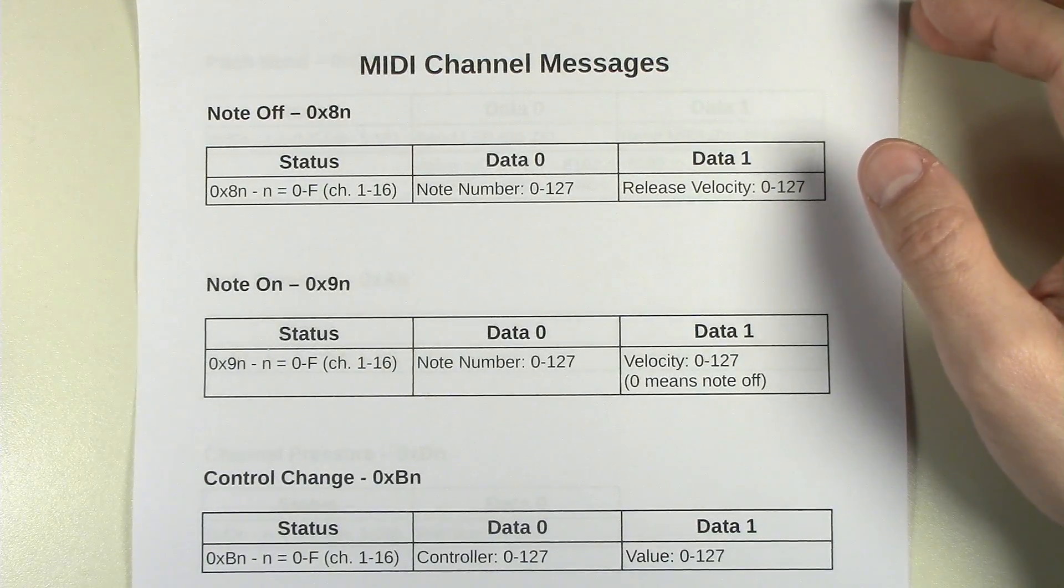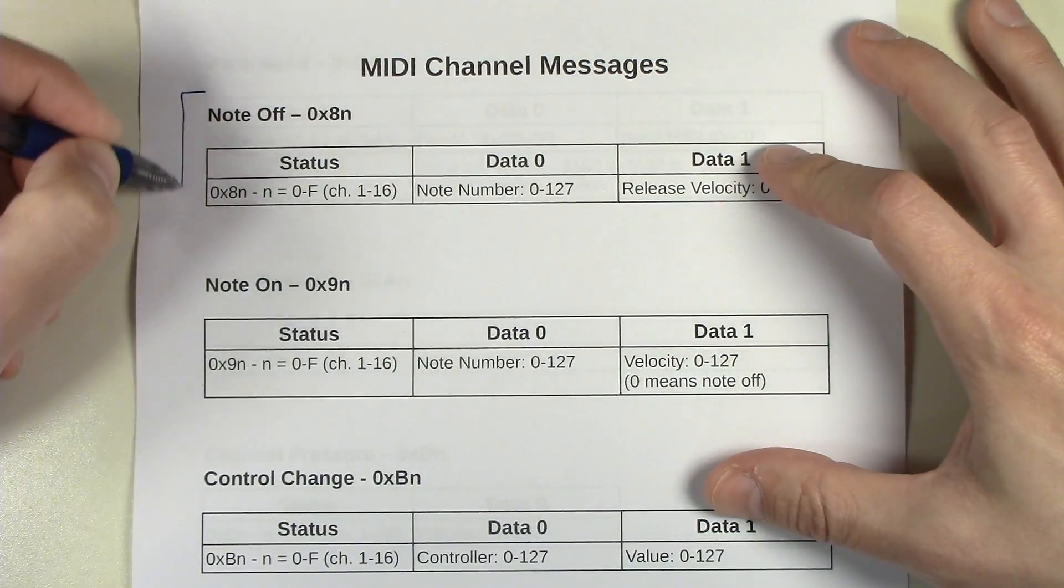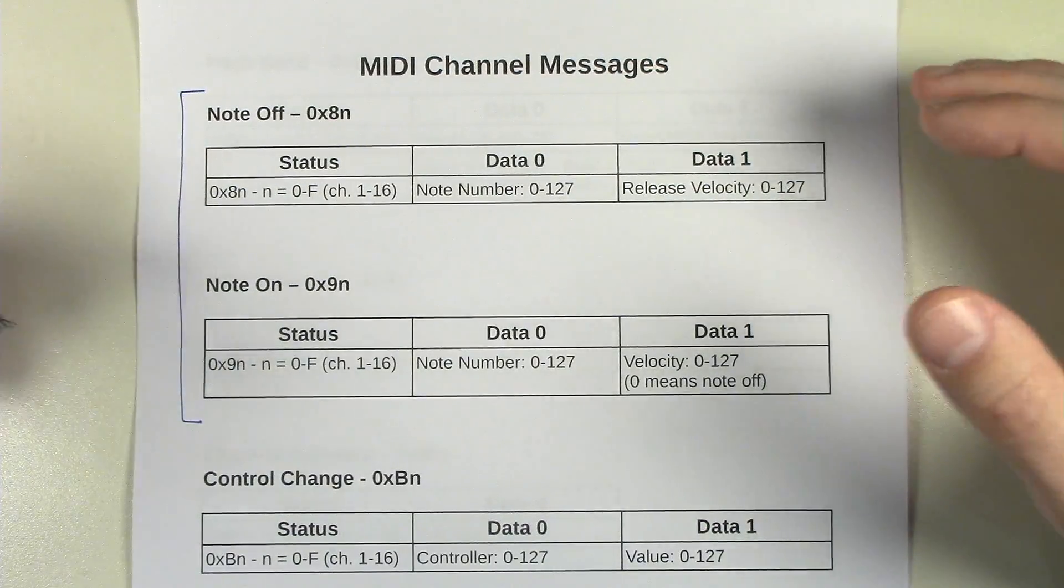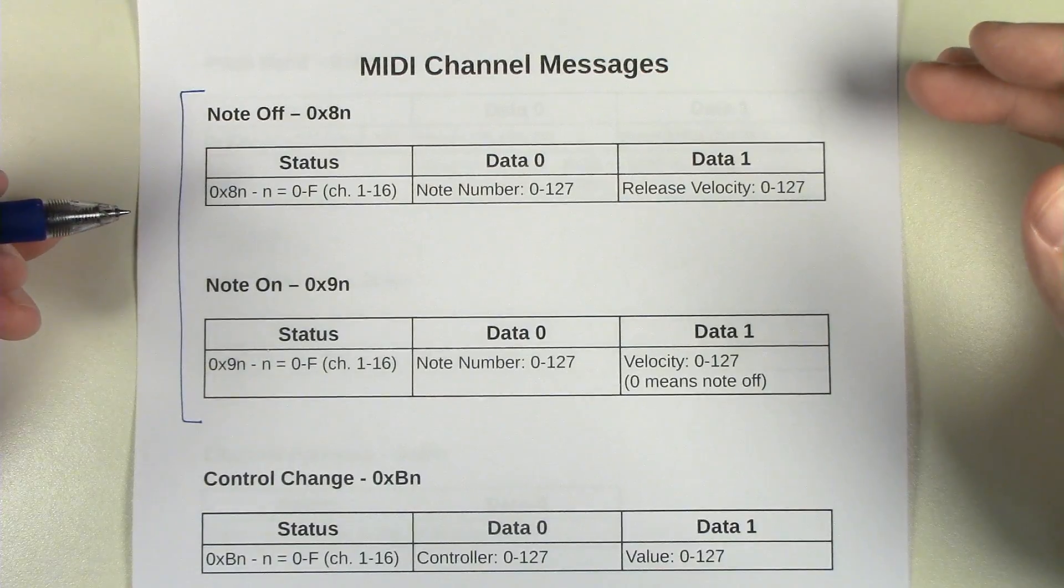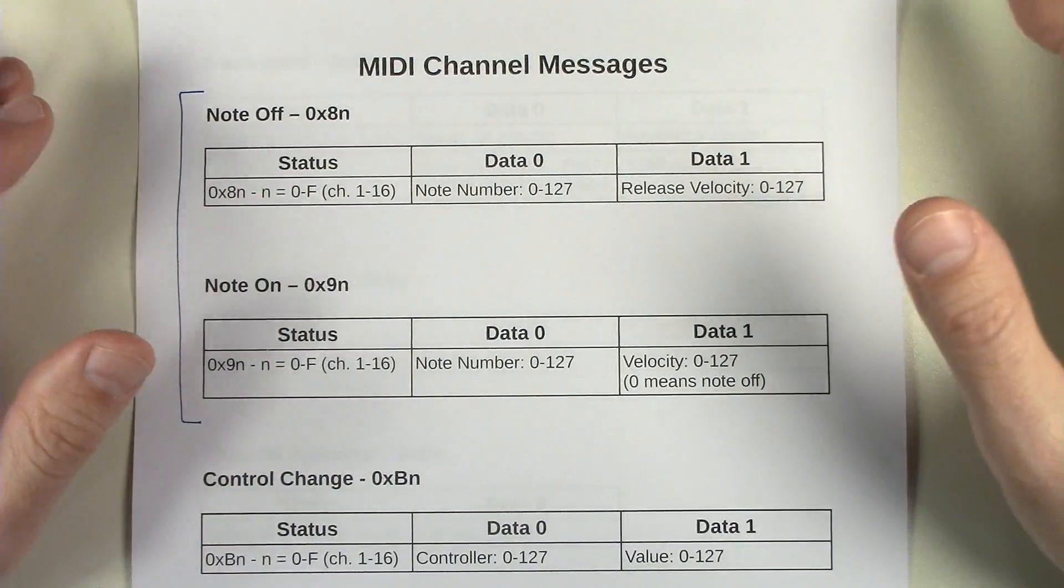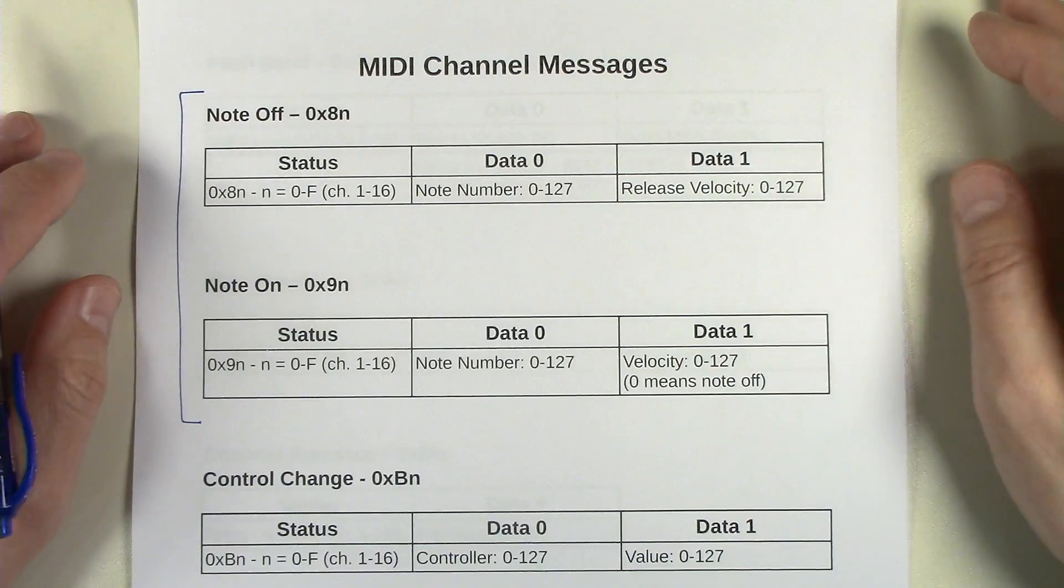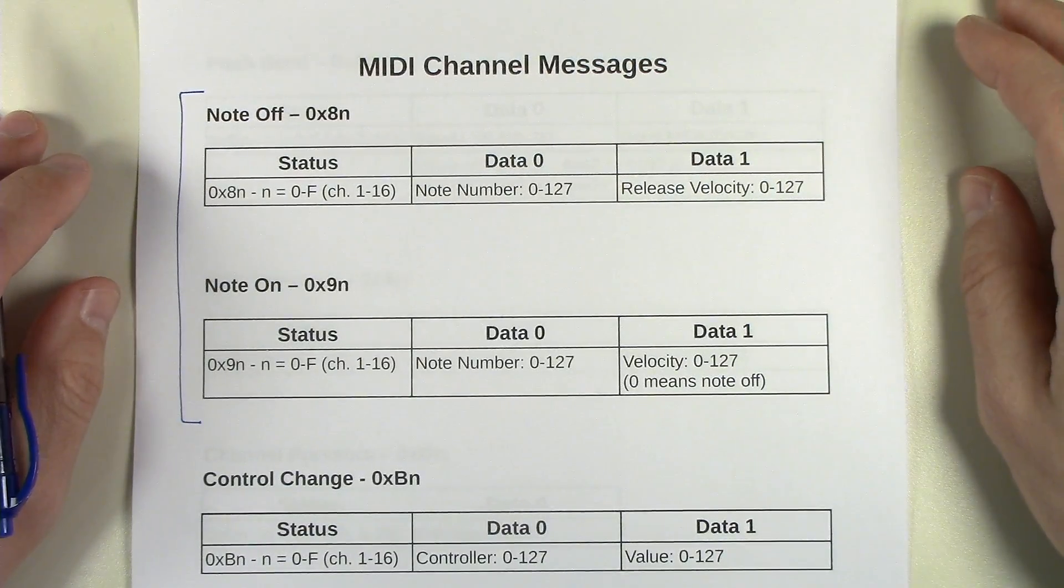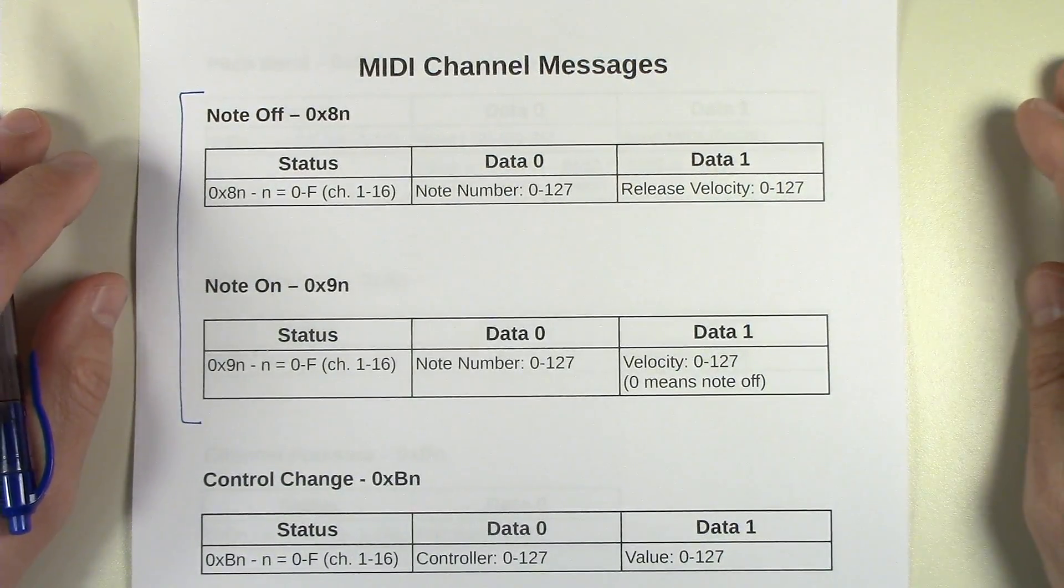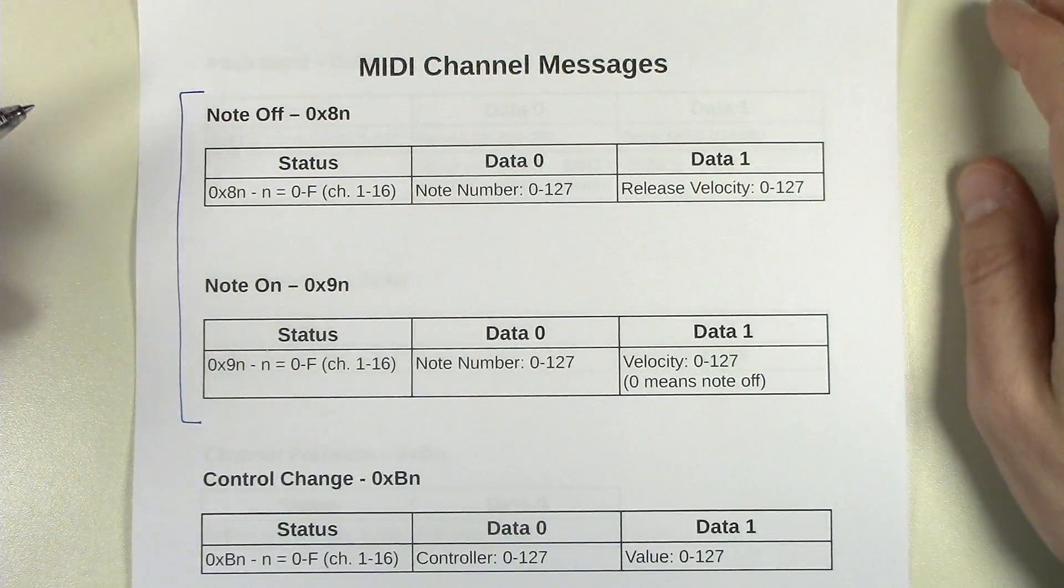Basically, the first ones and probably the most common MIDI messages that we know of are just Note On and Off. Pretty much any keyboard that has MIDI, if it's only going to support one kind of MIDI message, it's basically going to be note messages. Most have other functions as well, but these are the most common types.